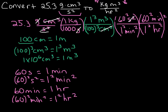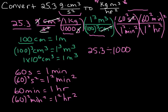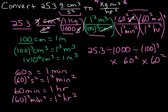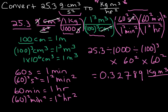Now we are ready to do our math. Remember, anything in the denominator we divide by, and anything in the numerator we multiply by. So we end up with 25.3 divided by 1000, divided by 100 cubed, then multiplied by 60 squared — which is 3600 — and again multiplied by 60 squared. When we put all of that in the calculator, we end up with 0.32789 kilograms meters cubed over hours squared.